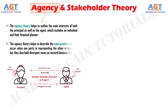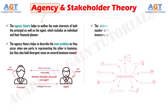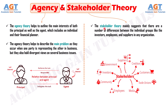Agency theory helps to describe the main problem as they occur when one party is representing the other in business, but they also hold divergent views on several business issues. On the other hand, the stakeholder theory mainly suggests that there are a number of differences between the individual groups like the investors, employees, and suppliers in any organization.